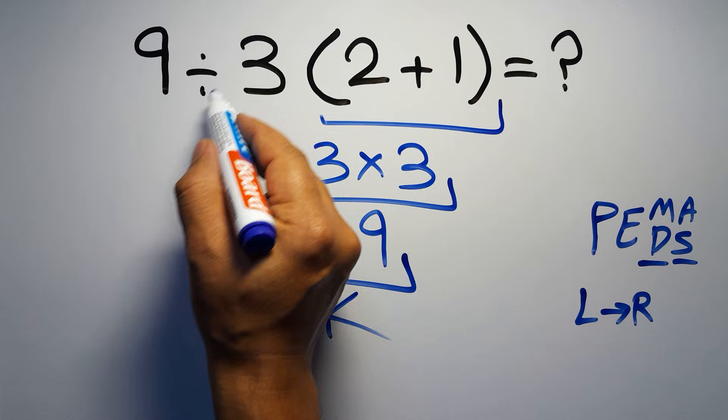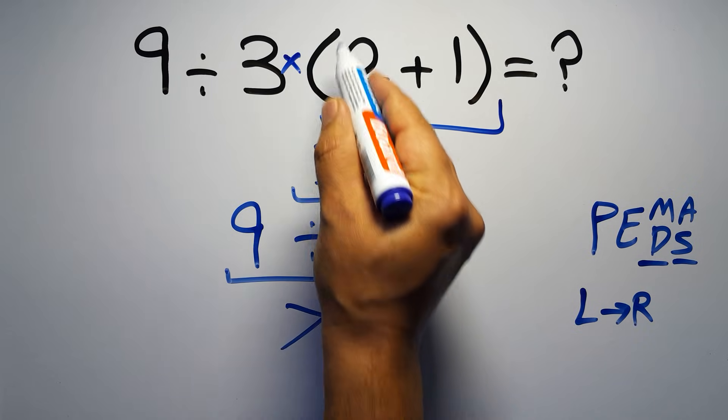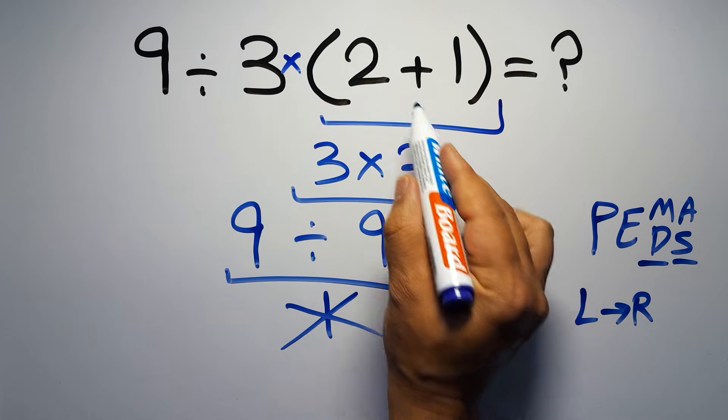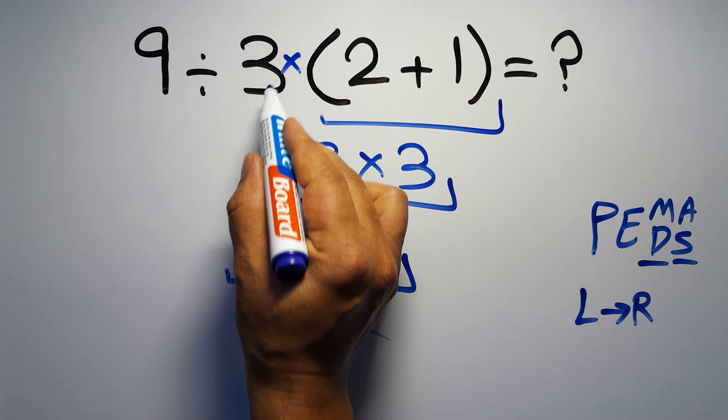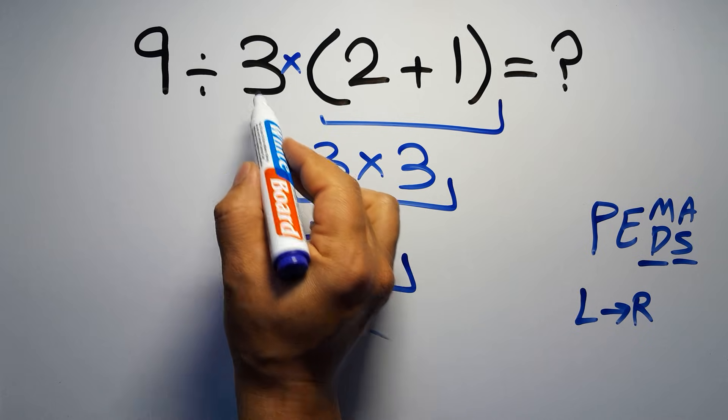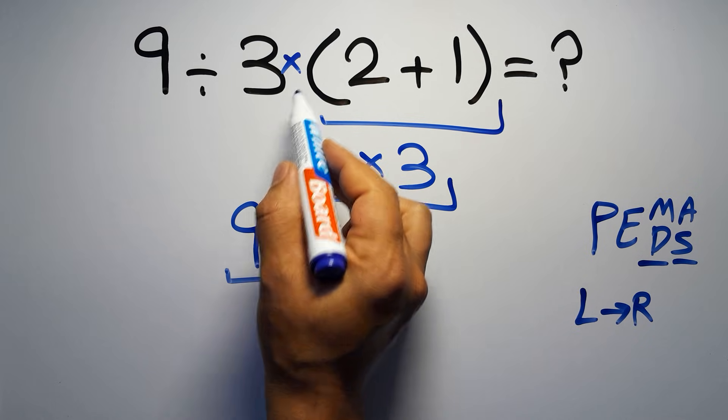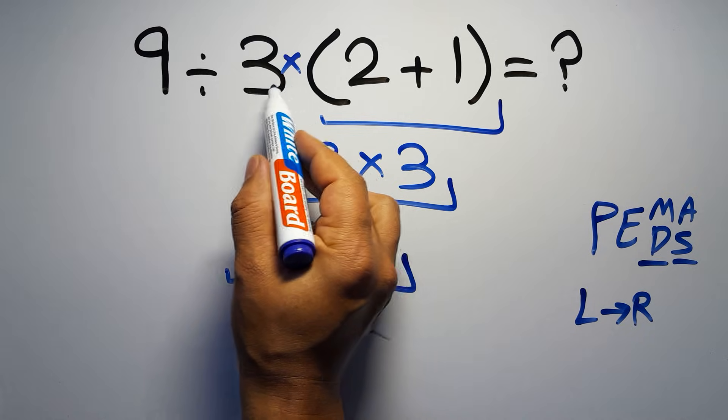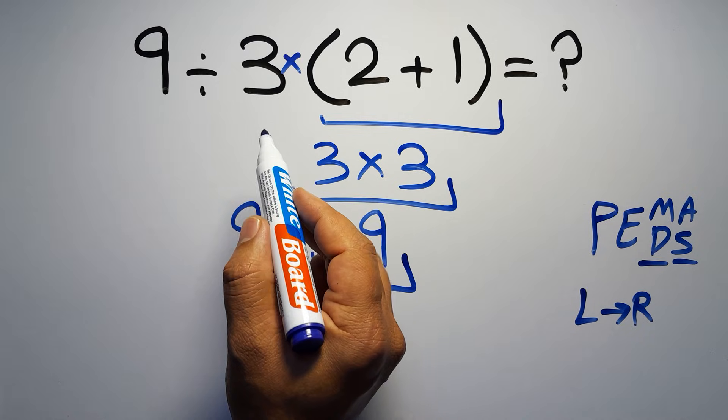In this expression, we have one division, one multiplication, and one parentheses. Inside this parentheses, we have one addition. Here we have a multiplication, because in mathematics, when a number is placed next to parentheses, it means multiplication, and we usually don't write the multiplication sign for brevity.